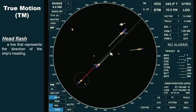This vessel is on the same course and speed. This one is a boat in a crossing situation. This vessel is on a reciprocal course. And this is an anchored vessel.